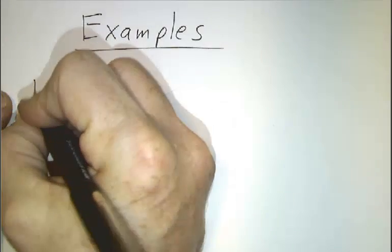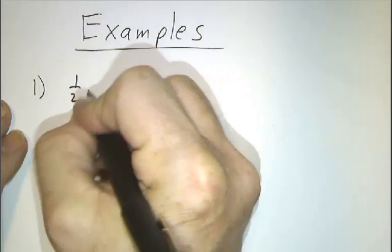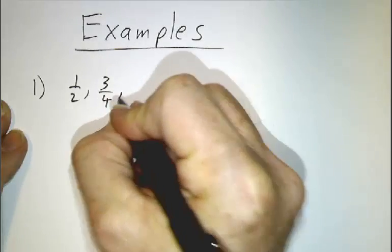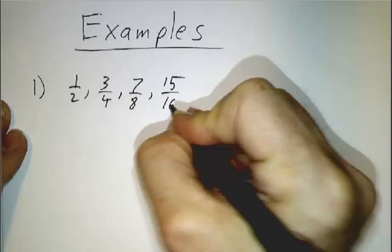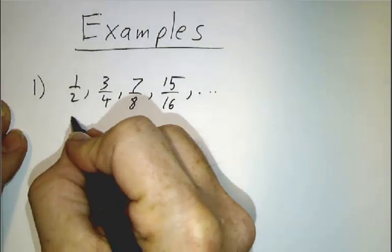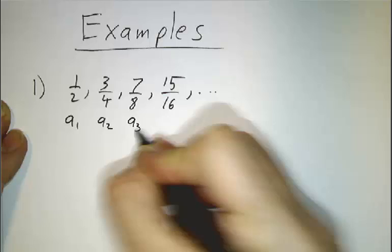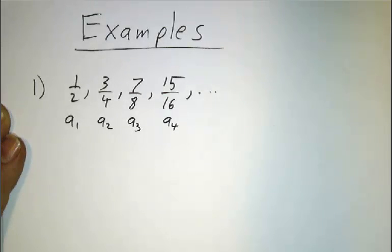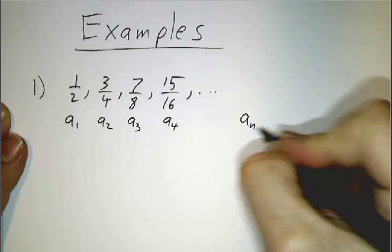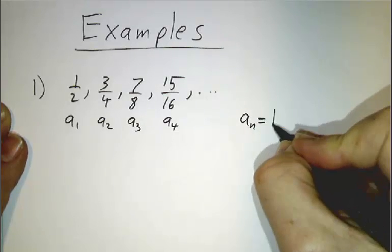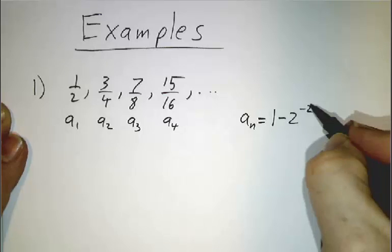Our first example is going to be the sequence: 1 half, 3 quarters, 7 eighths, 15 sixteenths, and so on. So this is a1, this is a2, a3 is 7 eighths, a4 is 15 sixteenths. And we can figure out a formula for the nth one — it's 1 minus 2 to the minus n.